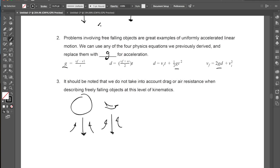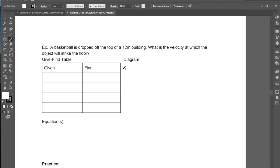Let's take a look at a couple examples of when we might use this type of situation. So in this case, we have a basketball that's dropped from the top of a 12 meter building. What we want to do is we want to find the velocity at which this object will strike the floor. What I like to do when I'm looking at a physics equation is I like to make myself a given-find table and usually draw a diagram to help me understand what's going on.